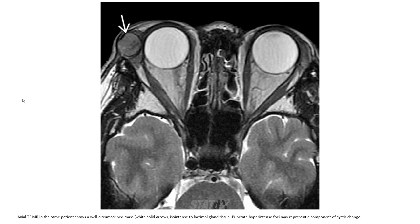This is the axial T2 of the same patient. A well-circumscribed mass, indicated by the white arrow, is isointense to lacrimal gland tissue. The focal hyperintense area represents a component of cystic change.